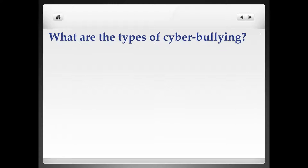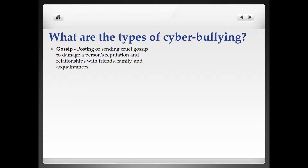So what are the types of cyberbullying? First of all, there's standard gossip. Gossip is something that can occur in real time right in front of your face, or it can happen behind your back on the internet or over cell phone networks. Gossip means posting or sending cruel information that damages a person's reputation and relationships with friends, family, and acquaintances.